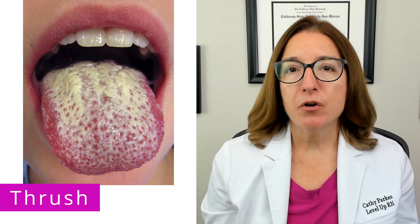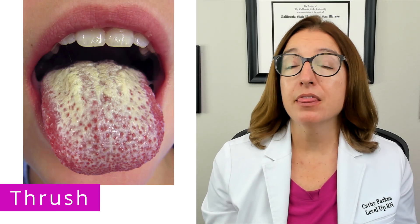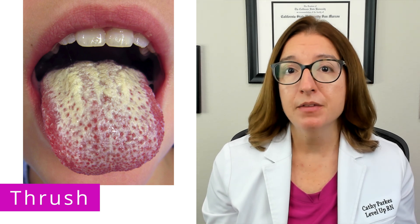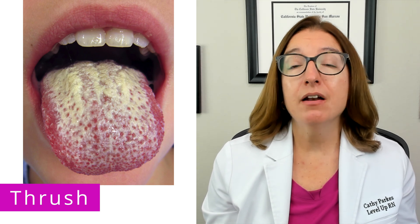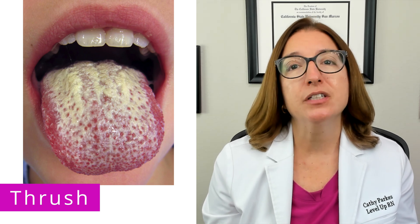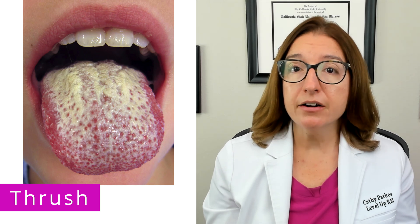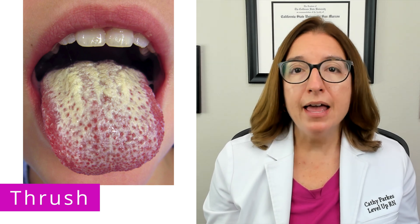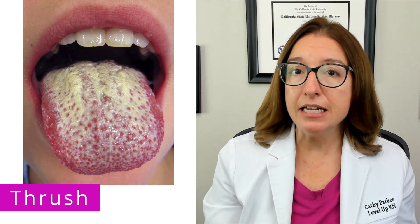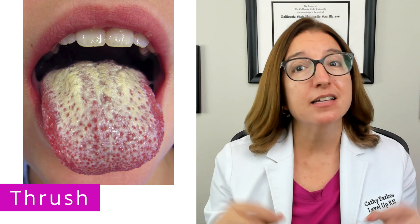Signs and symptoms of oral thrush include yellow or white plaques on the tongue and mucous membranes that cannot be scraped off. Candida overgrowth can also occur in the diaper area and cause a vaginal yeast infection. Signs and symptoms in this area include a red, painful, itchy rash with satellite lesions, as well as thick white cottage cheese discharge.